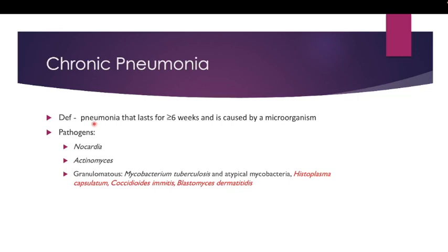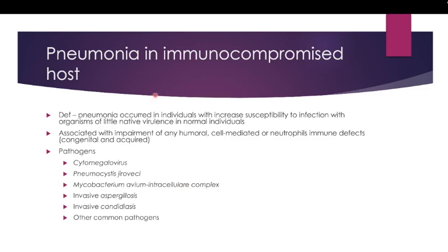Chronic pneumonia is defined as pneumonia that lasts for more than six weeks and is caused by microorganisms. Common pathogens are Nocardia and Actinomyces species, and organisms that induce granulomatous inflammation — for example, Mycobacterium tuberculosis, atypical mycobacteria, Histoplasma capsulatum, Coccidioides immitis, and Blastomyces dermatitidis — the last of which are fungal infections that will be covered in other lectures.